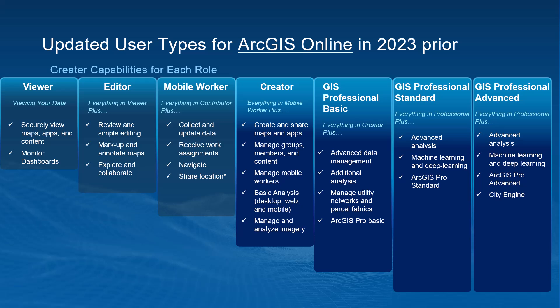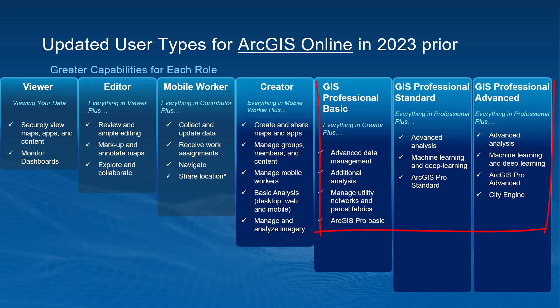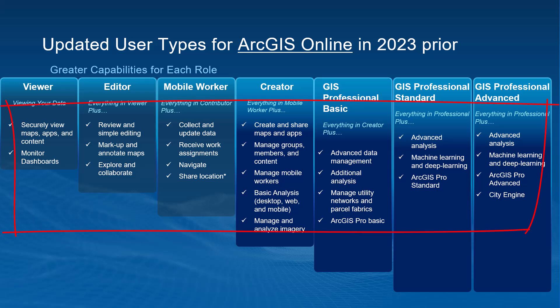So what was it like before the update? Well, there used to be a total of seven user types that could have been assigned to a member of your organization. These were viewer, editor, mobile worker, creator, and three separate GIS professional user types from basic to advanced. And shown here are the main specifications for each.